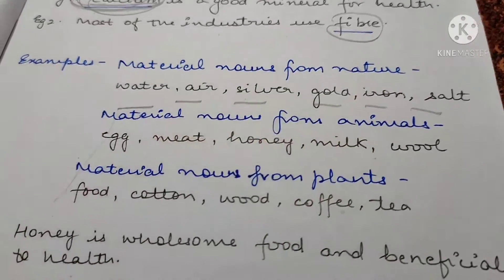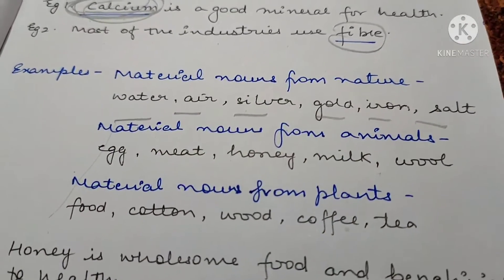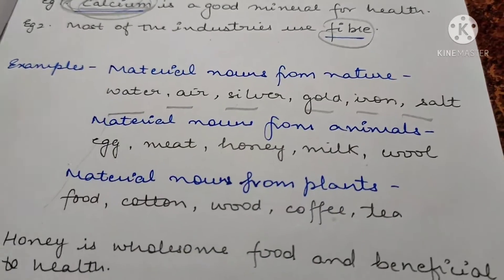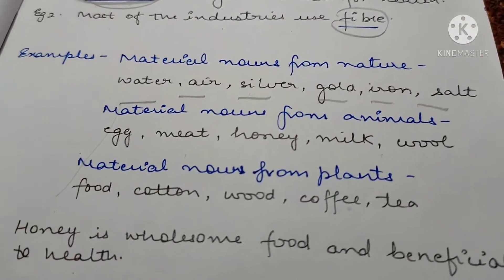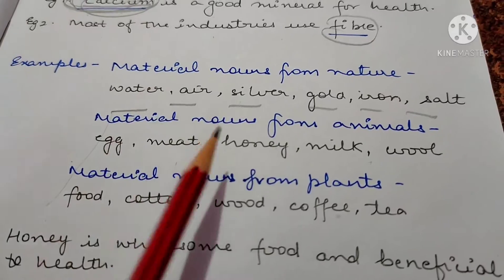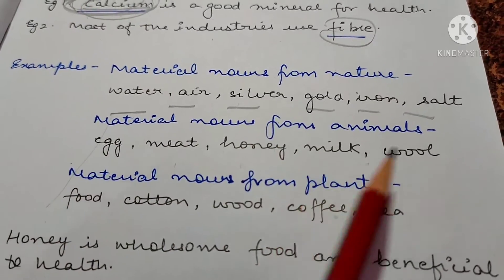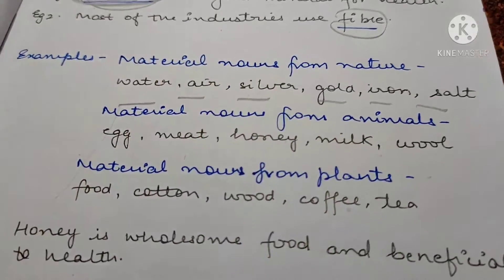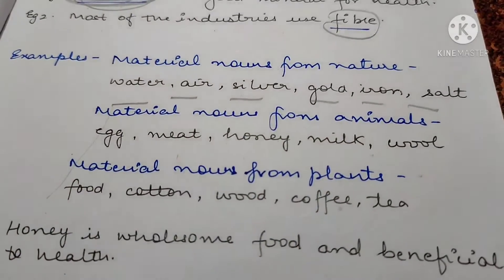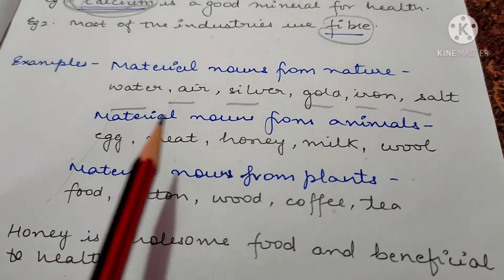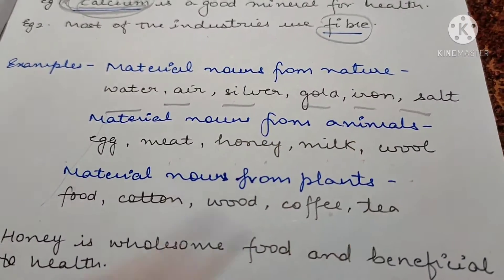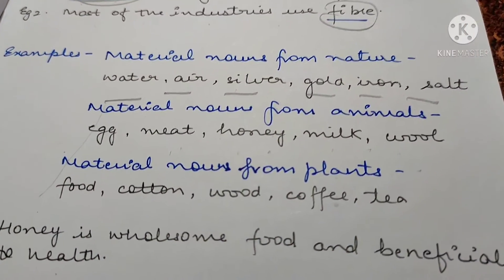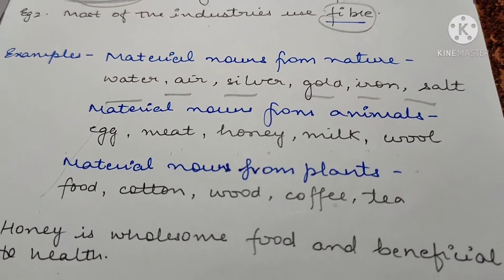Material nouns from animals — animals سے کیا کیا چیزیں ملتی ہیں. We have egg, meat, honey, milk, wool. So these are your material nouns from animals.